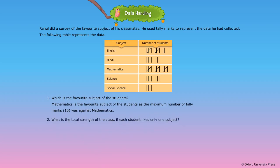2. What is the total strength of the class if each student likes only one subject? Total number of students is equal to 12 plus 7 plus 15 plus 8 plus 5 is equal to 47.